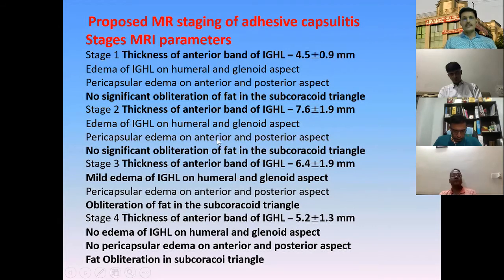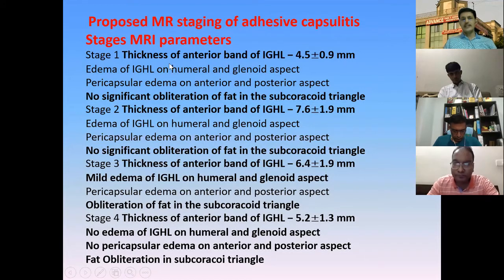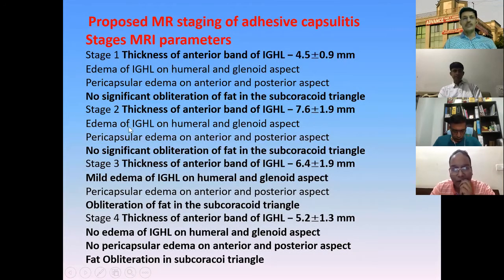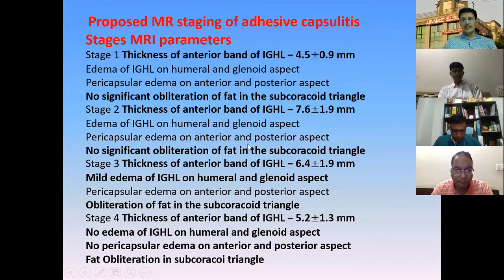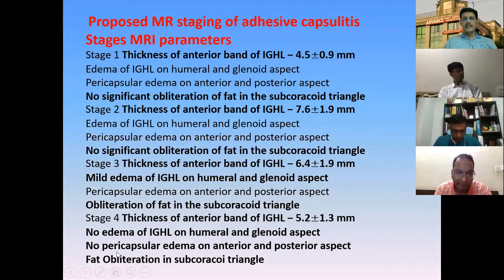There is a staging system based on MRI. Stage one shows IGHL thickness with edema only. In stage two, the thickness of the IGHL band increases. In stage three, the IGHL thickness remains but decreases along with decreasing edema. In stage four, the thickness decreases further with no edema — a resolving kind of stage.